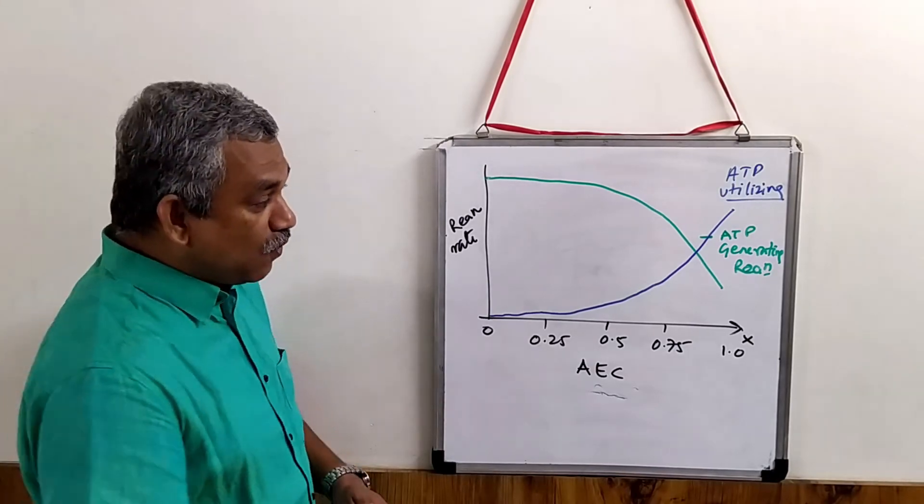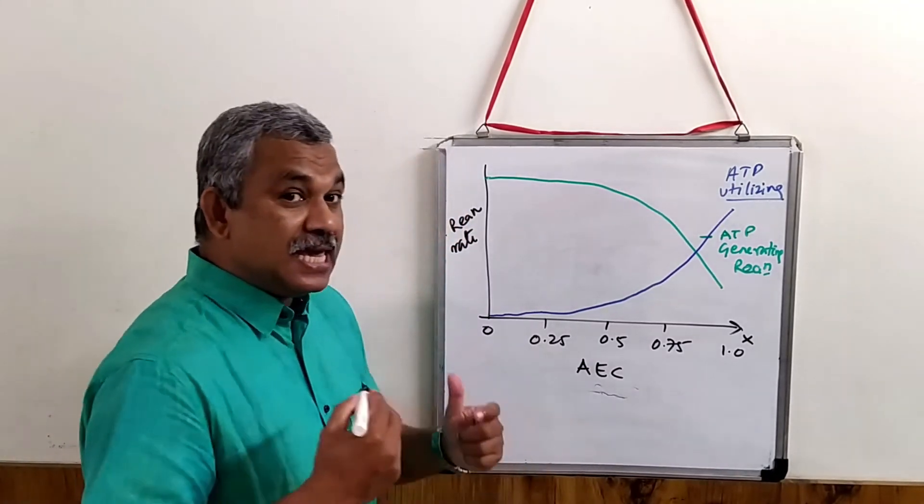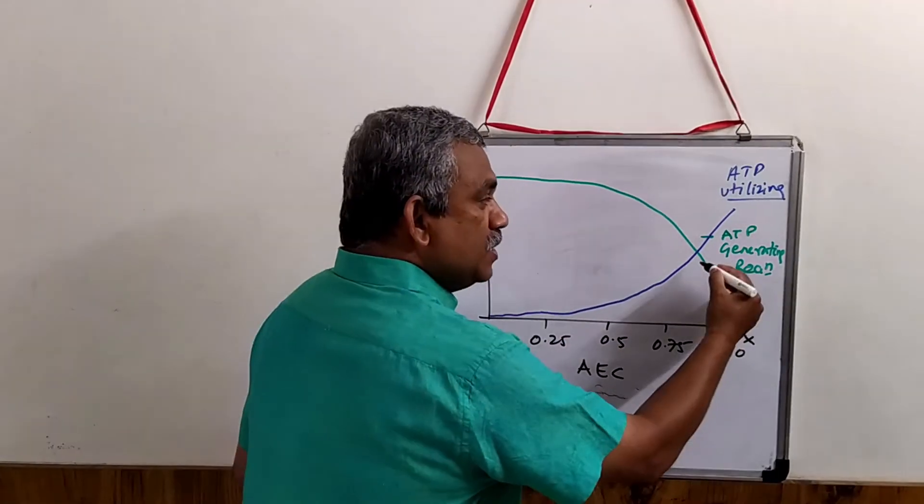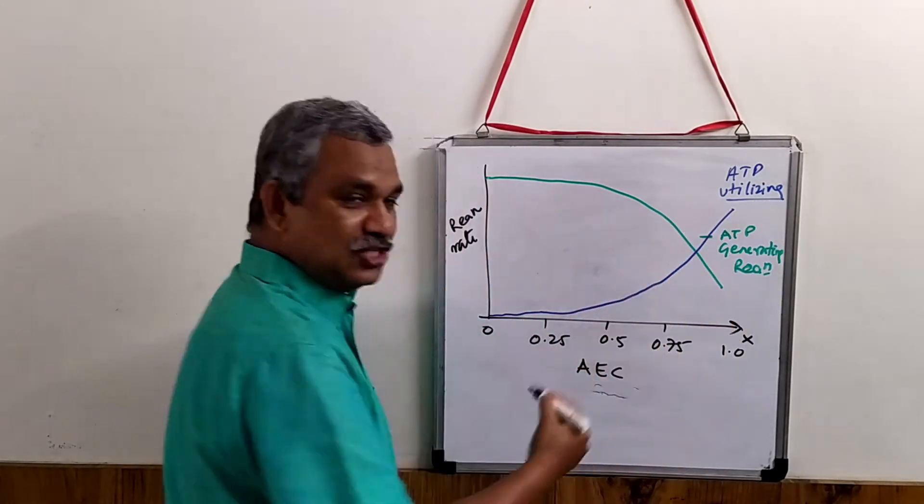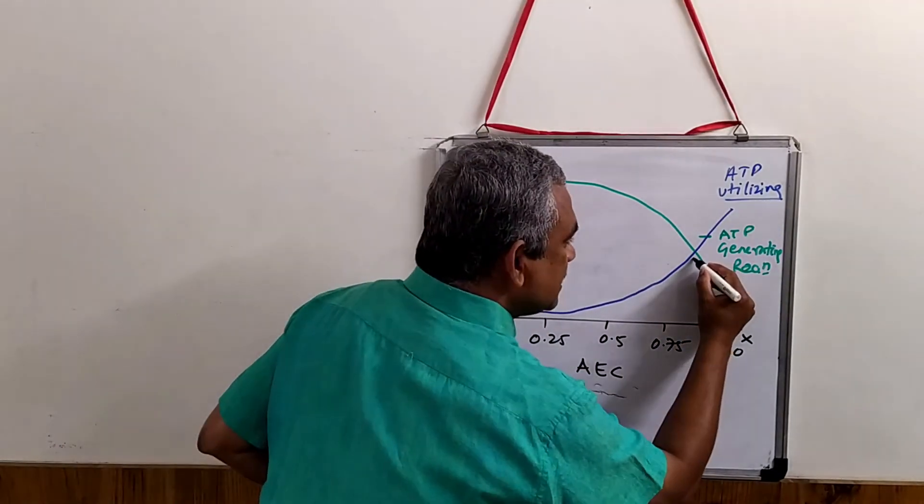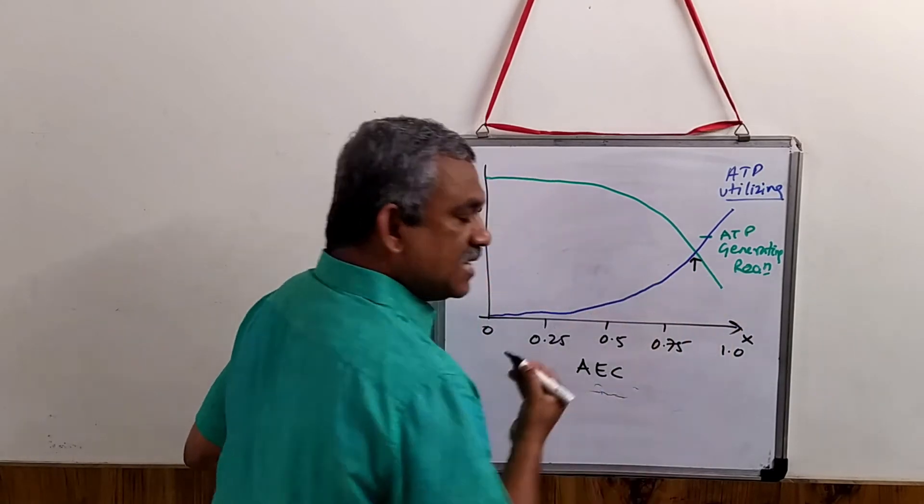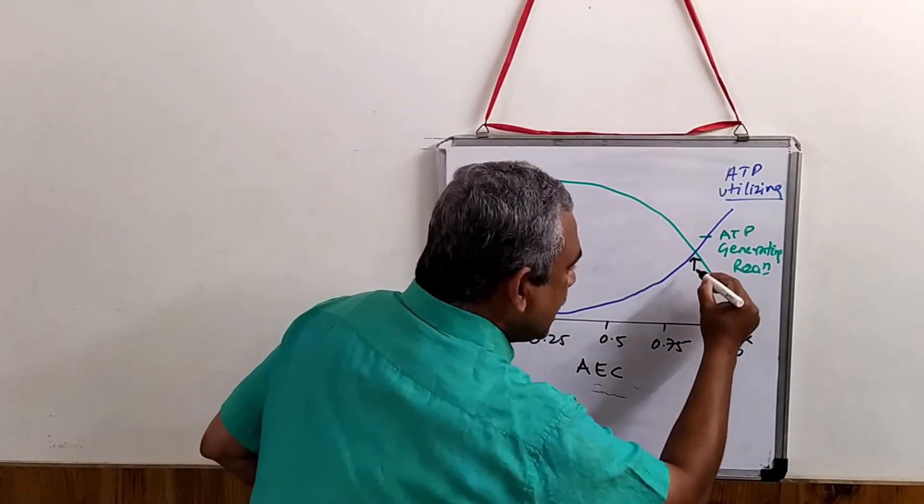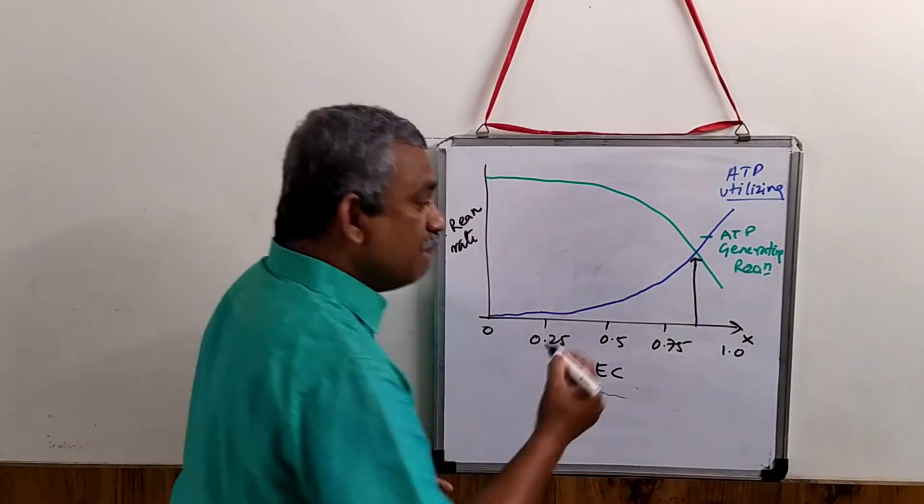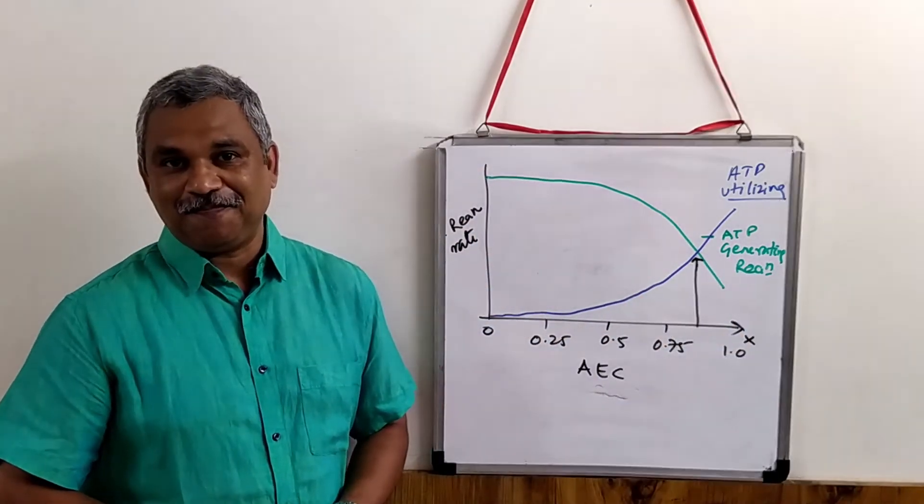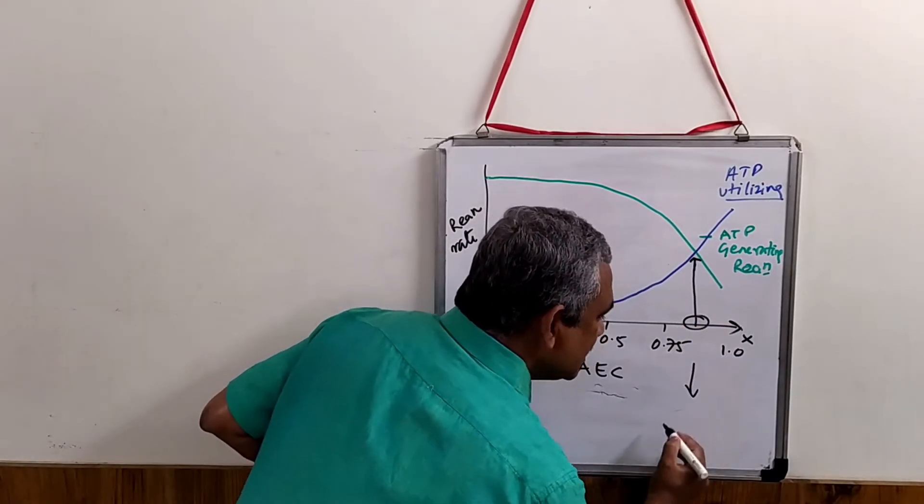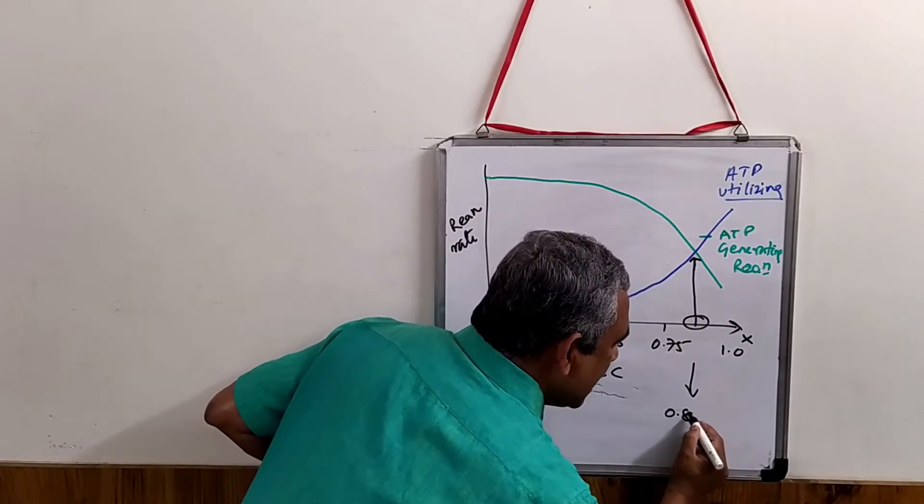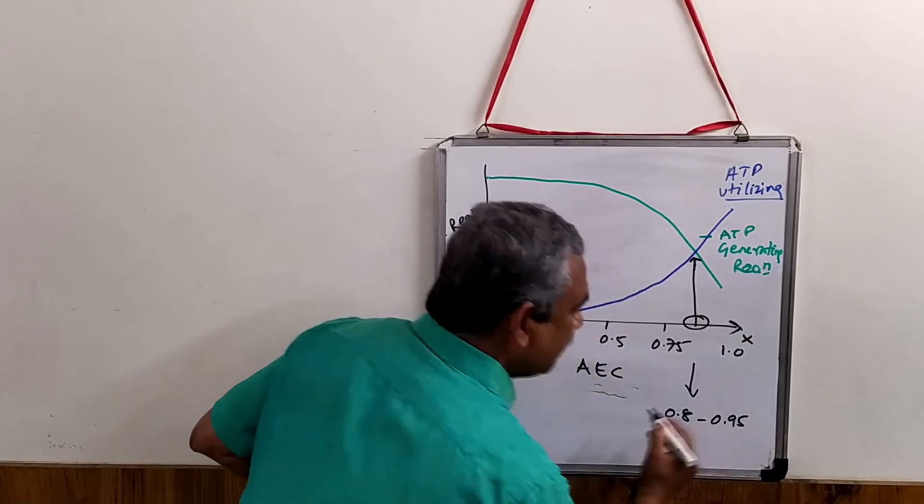What is important for us to know is, if you draw the slope, the slope is the steepest in this region. And it is intersecting here. It is intersecting at this point. If you try to find the value of where it is intersecting, it is normally intersecting at a value that is about 0.8 to 0.95.